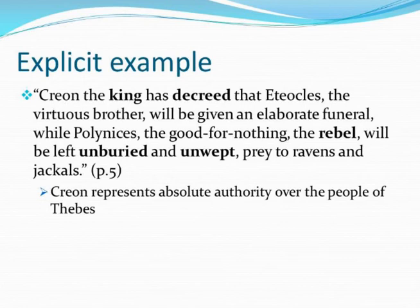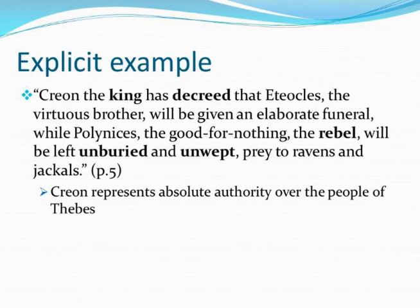The diction used reinforces Creon's power and authority. 'Decreed' emphasizes his power, showing that all of Thebes have heard and will obey his words. Reminding the audience that he is the king emphasizes his high status. Dubbing Polynices as a rebel highlights his supposed villainy. The phrase 'unburied and unwept, prey to ravens and jackals' gives a harsh imagery of Polynices' piteous state. The ravens and jackals are also strong symbols of death.